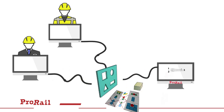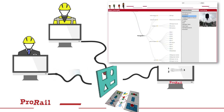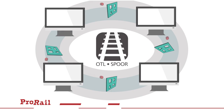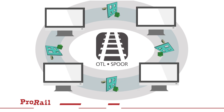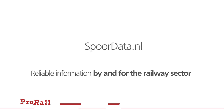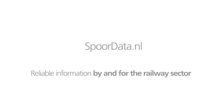Automated checks are carried out on whether the information being exchanged meets the requirements. The user has various options for presenting the information, but they are always based on the same structure and the same definitions. The OTL plays an important part in realising and maintaining correct, complete, up-to-date and accessible rail data. SporeData.nl — reliable information by and for the railway sector.